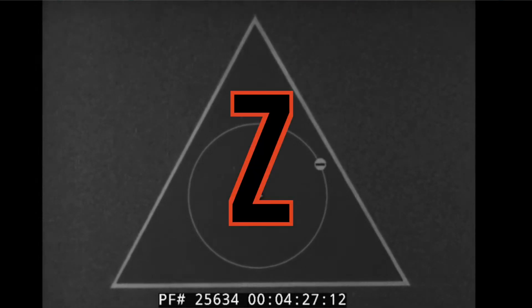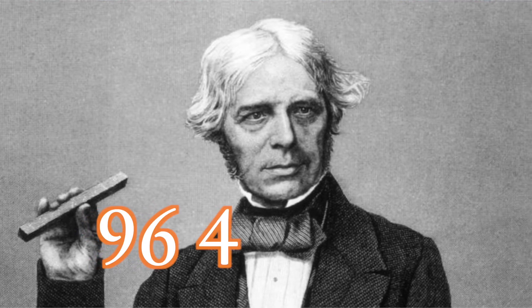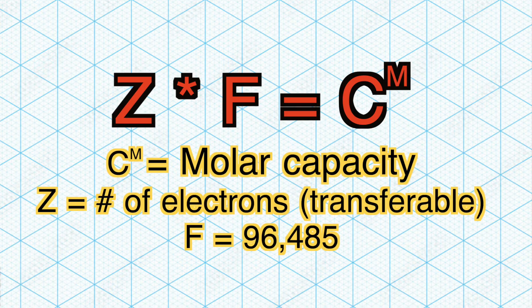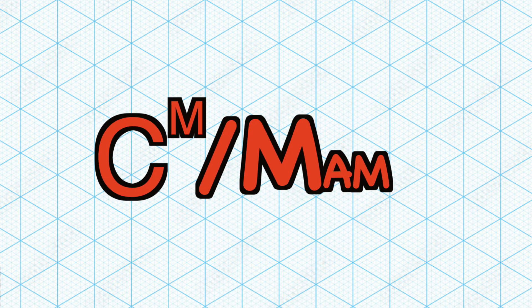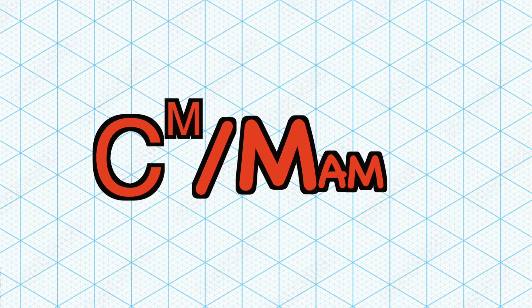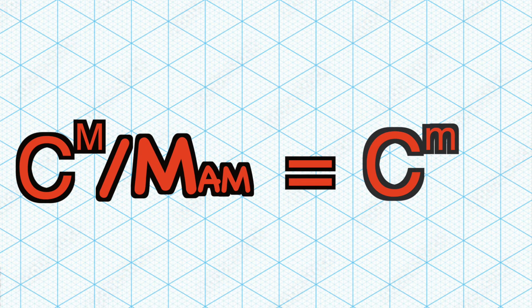Next we need to multiply this by the Faraday constant, which is 96,485 and is represented by an F. Multiplying these yields the molar capacity. If we then divide this by the molar mass of an element, which can be pulled directly from the periodic table, this finally gives us the specific capacity.